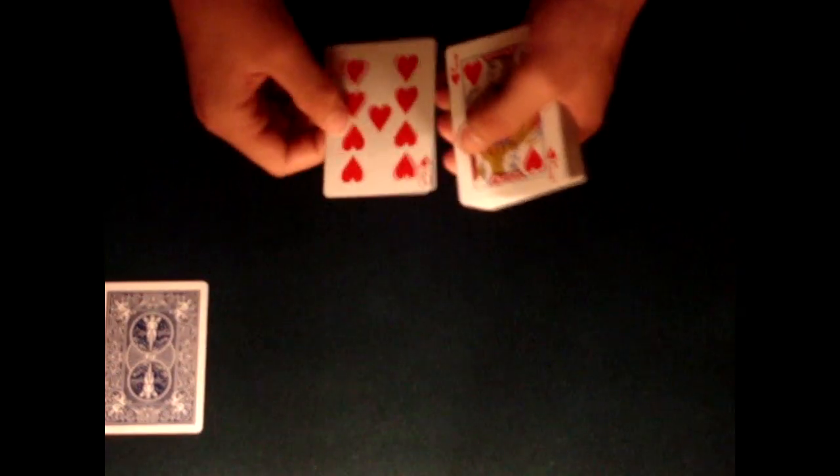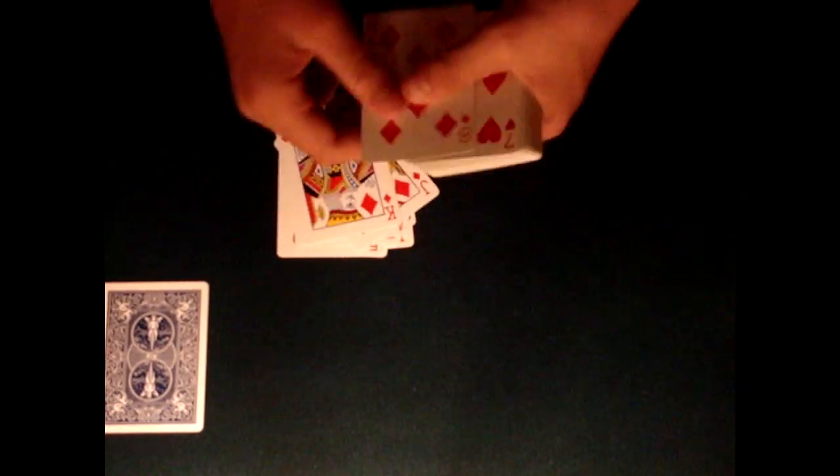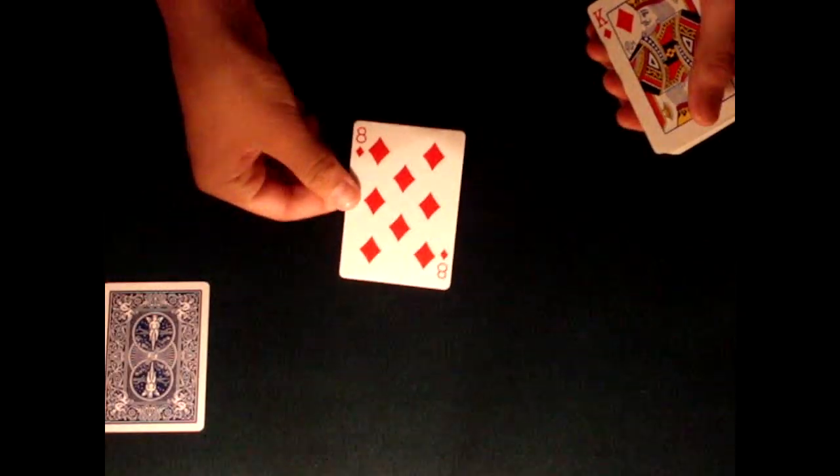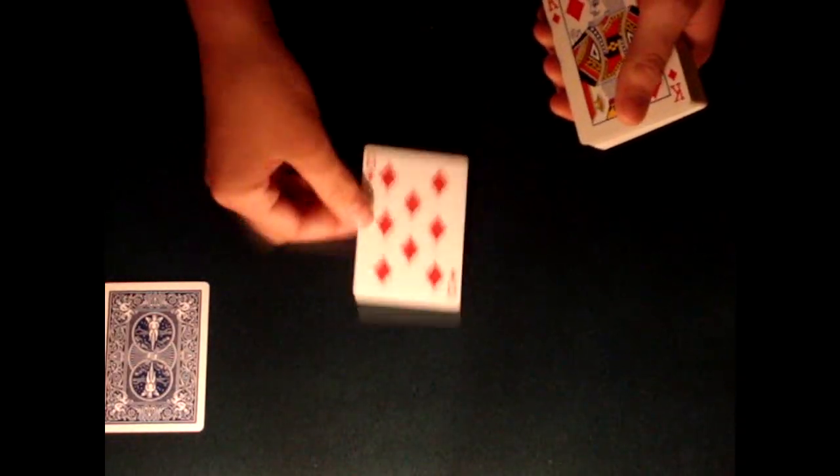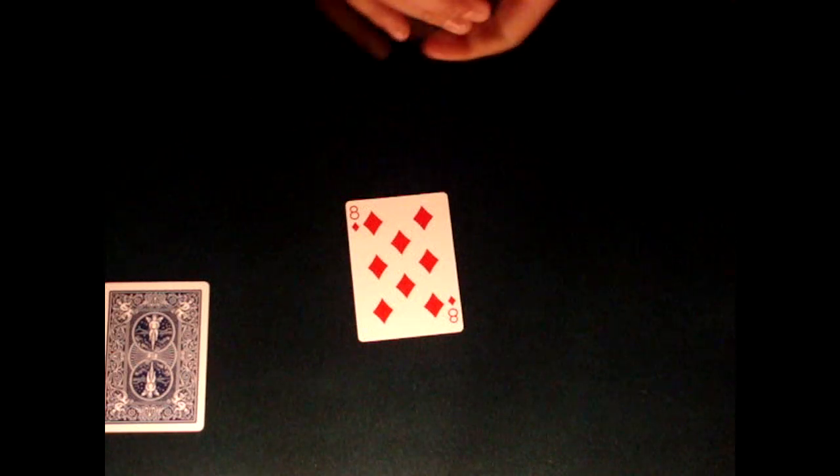So I'm going to deal down ten cards: one, two, three, four, five, six, seven, eight, nine, ten. As you can see, the selected card is the eight of diamonds. Now what I'm going to do is bring back the prediction card.